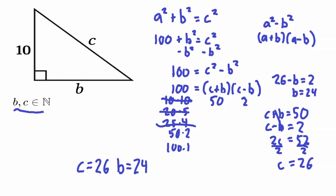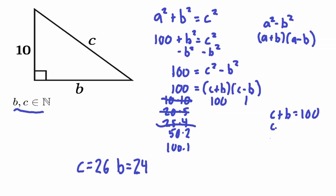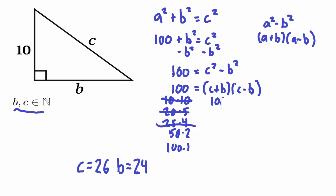Just to be thorough, let's also check 100 × 1: c + b = 100 and c − b = 1. Adding gives 2c = 101, so c = 50.5 — not an integer, so this is not correct either. So our answer is confirmed: c = 26 and b = 24.